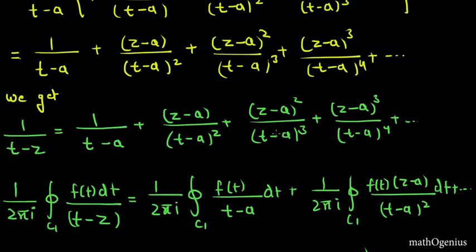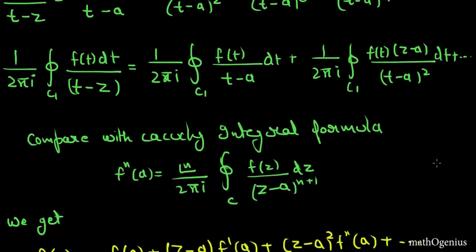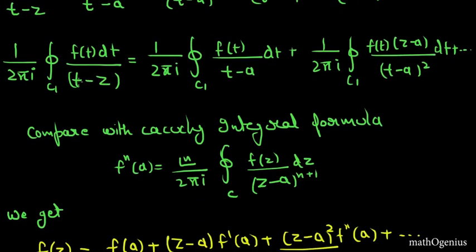So we get 1/(t−z) equal to our expanded expression. Now we will apply the Cauchy integral formula by multiplying every term by f(t) · 1/(2πi) and integrating along the curve C₁ with respect to dt. So we multiply f(t)/(2πi) through every term and integrate each term along C₁.